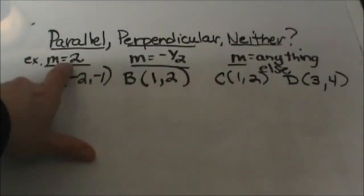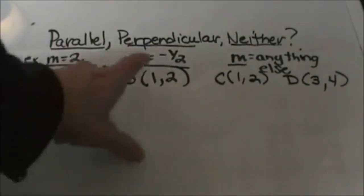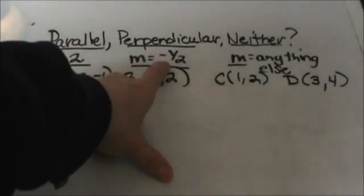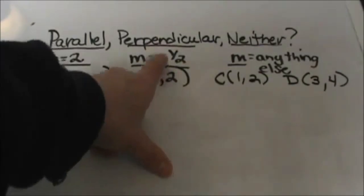To be parallel, they have the same slope. If my original line has a slope of 2, then if the new line has a slope of 2, they're parallel. If my original line has a slope of 2 and the new line has a slope of negative 1/2, that's its negative reciprocal, then they would be perpendicular.